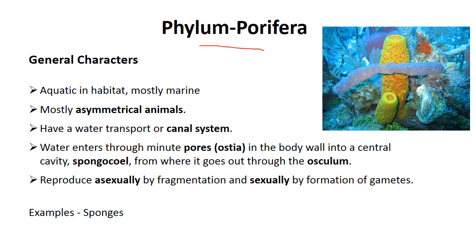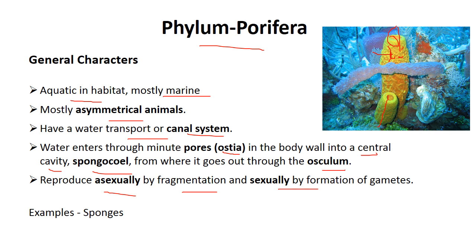First, Porifera — the most primitive animal on planet Earth. They are aquatic, mostly marine, and asymmetrical organisms, so there is no symmetry in phylum Porifera. They have a water transport or water canal system. Water enters the body through minute pores called ostia, into the central cavity called the spongocoel, and then goes out through a large opening called the osculum. Reproduction is basically asexual by fragmentation, or sexual by formation of gametes. Example: sponges.